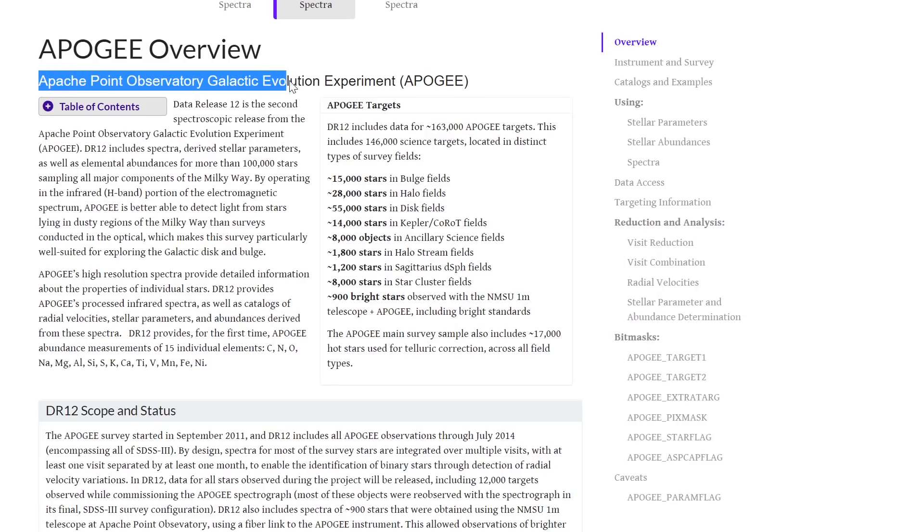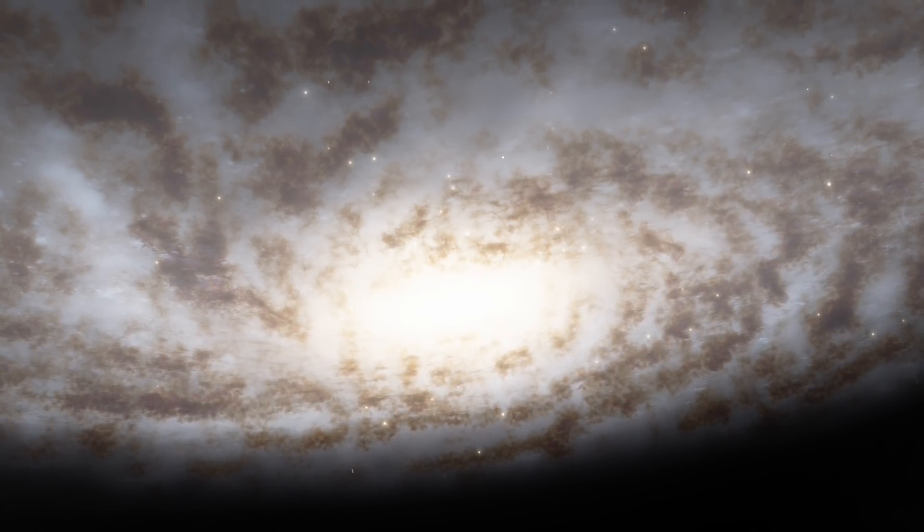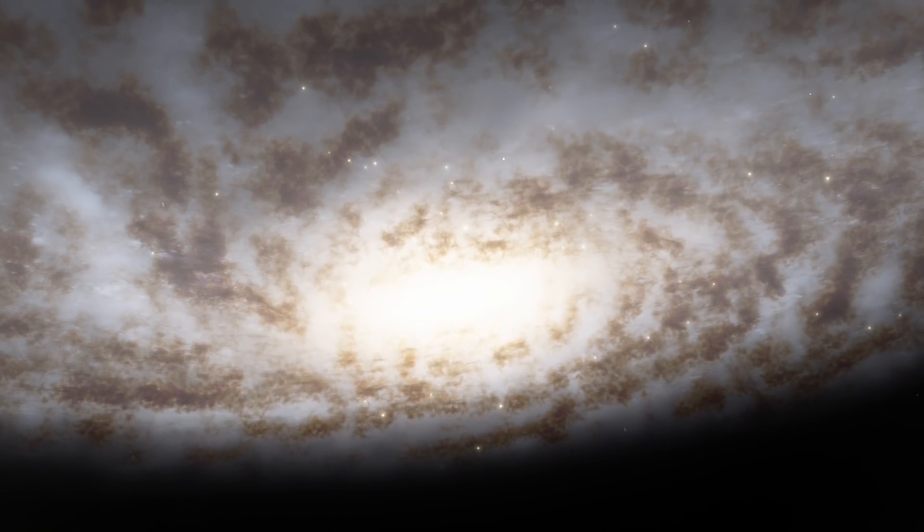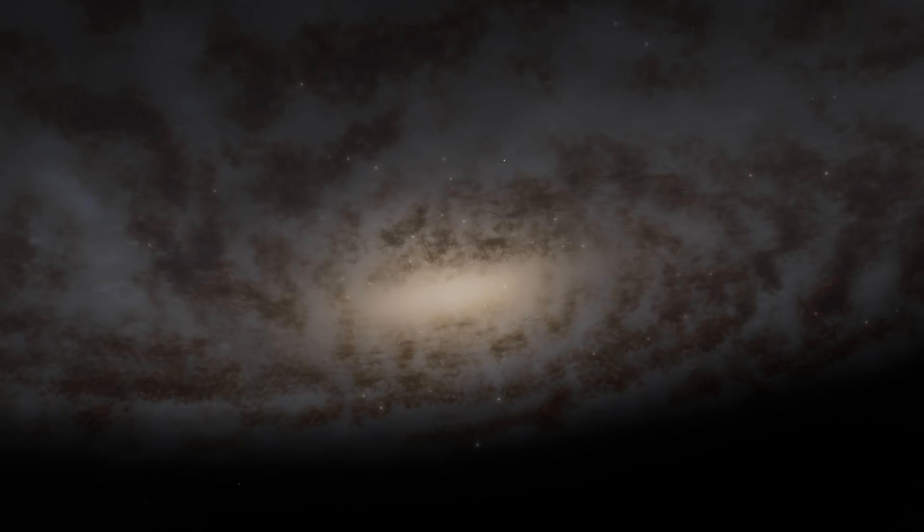Apache Point Observatory Galactic Evolution Experiment. You can actually look at this in not just visual light but also near infrared light that does go through some of this gas and allows us to see what sort of stars and what sort of other material is located in the center of the galaxy.